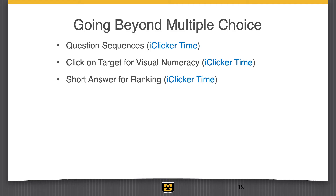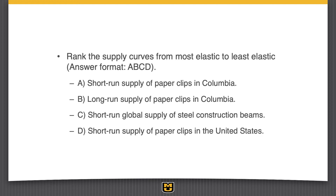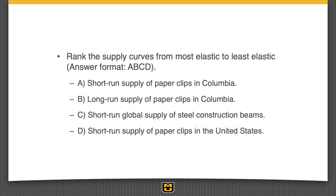We can also be creative. There is no ranking question in iClicker, but there is a text question. This one illustrates ranking elasticities from most elastic to least elastic. I give them the format: type this in as text, capital A, B, C, D — I like to give the format because there's always someone who uses lowercase, spaces, or commas no matter how many times I say otherwise. But you can get this in, you can see which is the most common answer, and display the answer going from long run to short run, local to national, national to global, plus using something that uses up more of the input.